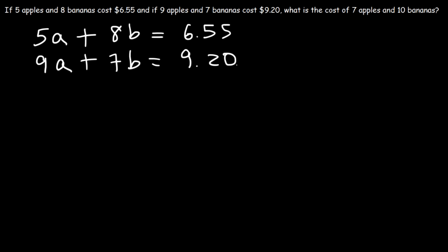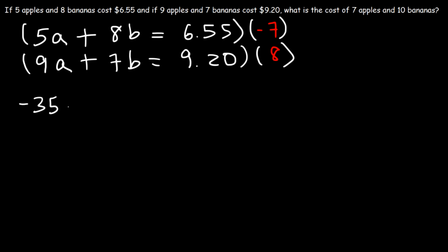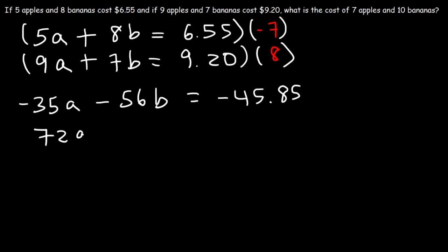We can multiply to clear decimals, but we don't have to. Let's multiply the first equation by negative 7 and the second by positive 8 to eliminate b. That gives: negative 35a minus 56b equals negative 45.85, and 72a plus 56b equals 73.60.